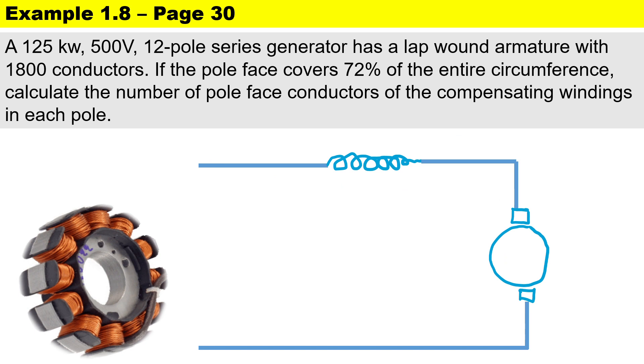Looking at the given information: the output power is 125,000 watts with a terminal voltage of 500 volts. It is lap wound, therefore c equals 2 times p, which is 2 times 6 equals 12. There are 1800 conductors, so z equals 1800, and p, the number of pole pairs, is 6.